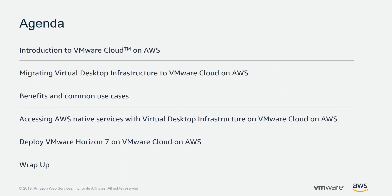Looking at the agenda, we're going to do a little bit of an introduction to VMware Cloud on AWS, talk about migrating virtual desktop infrastructure to VMware Cloud on AWS, include some of the benefits and common use cases, the benefits of being able to access AWS native services with these solutions, and some information about deploying Horizon 7 on VMware Cloud on AWS. Then a wrap-up.